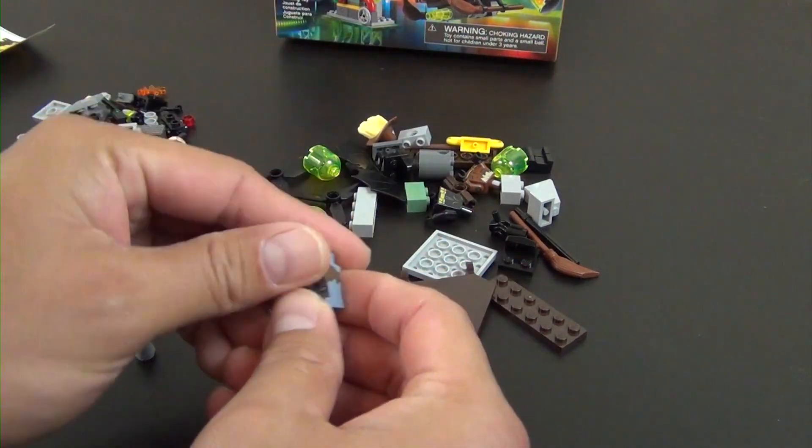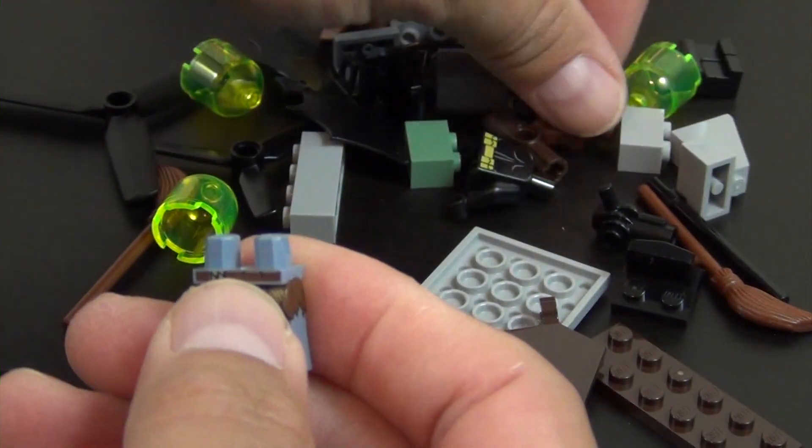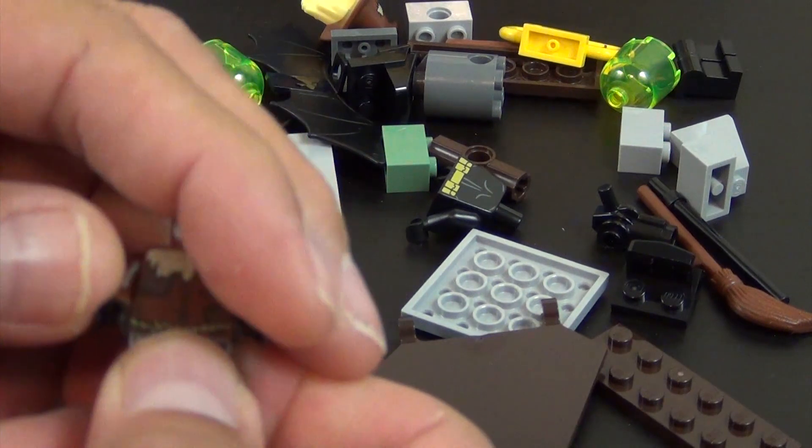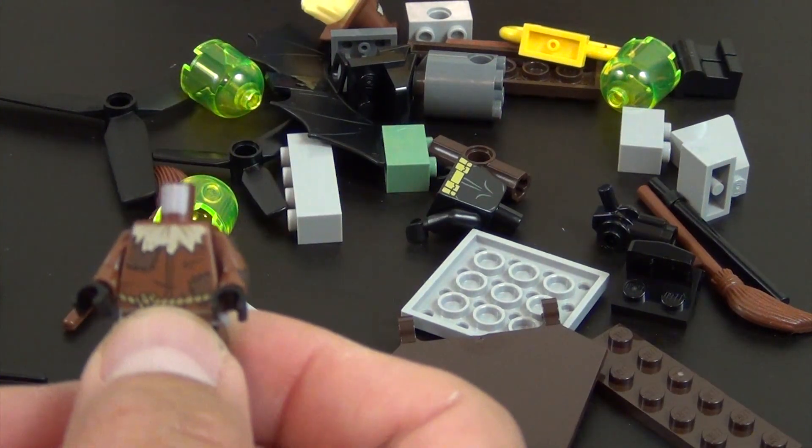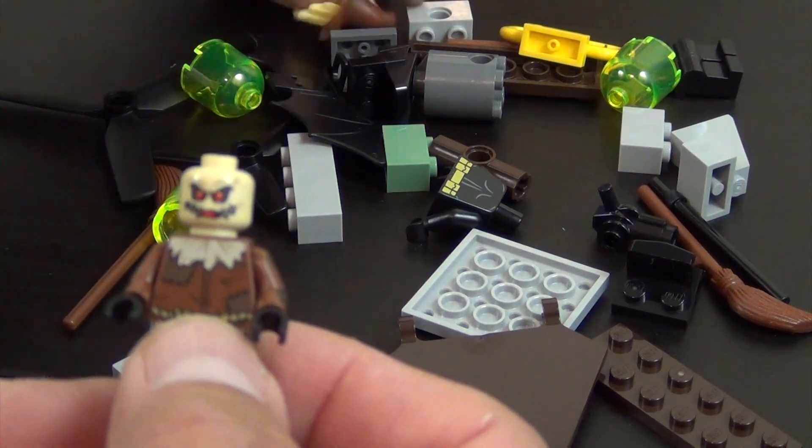So let's begin with our minifigures. Start with Scarecrow. This is more of the standard Scarecrow versus the pizza delivery one where he was in a delivery costume. So there's what I would consider your standard Scarecrow minifigure.